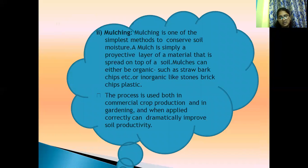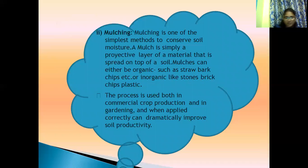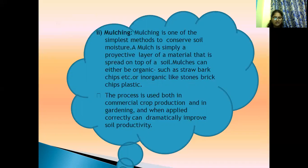The next method is mulching, which is one of the simplest methods for conserving soil moisture, already discussed in the previous class. The different methods of planting or crop production include gardening and mulching, which is divided into two types: organic mulches and inorganic mulches. Organic mulches include straw, wood chips, shavings, cocoa beans, crushed corn cobs, and grass clippings. Inorganic mulches include stone bricks, tiles, gravels, pebbles, weed barriers, and recycled rubber tires.